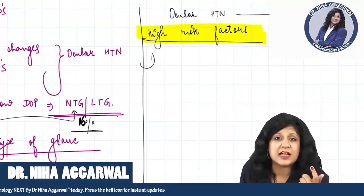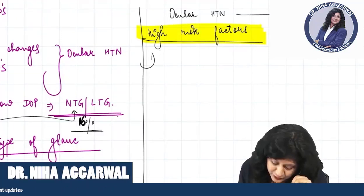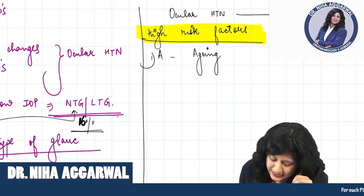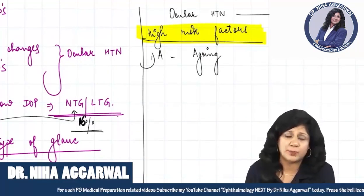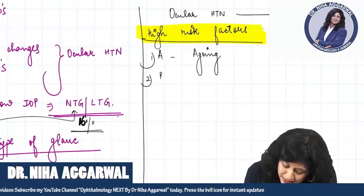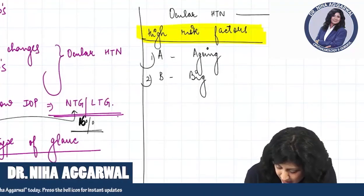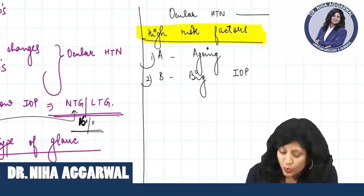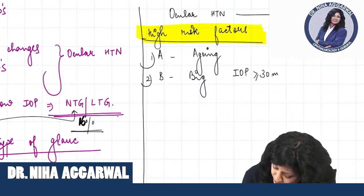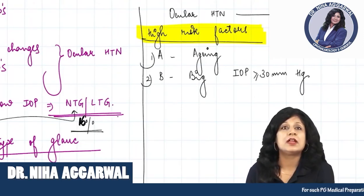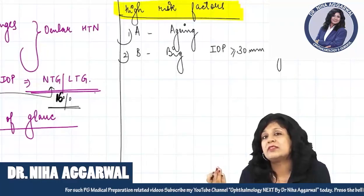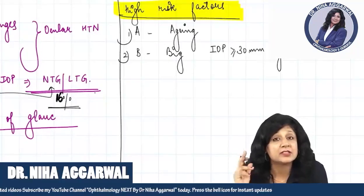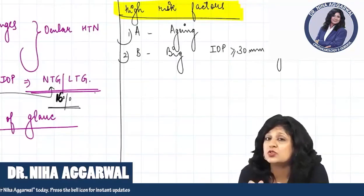I always try to relate these with alphabets. A is for aging — as age increases, there are more and more chances that a person with ocular hypertension can progress to primary open angle glaucoma. B is for big IOP — if IOP is quite high, more than 30 mmHg, that is a high risk factor and this person has more chances of converting to POAG.